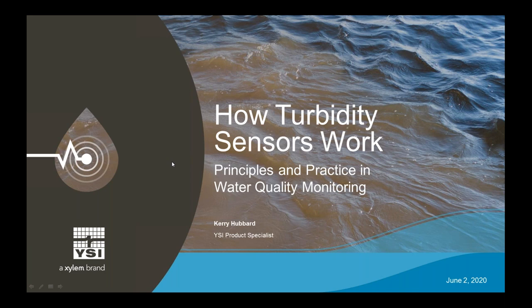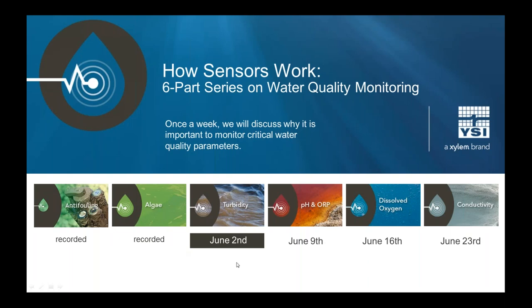Today's turbidity webinar is the third part of a six-part YSI series covering various parameters within water quality monitoring. We're holding webinars every Tuesday. Upcoming presentations include June 9th covering pH and ORP, June 16th dissolved oxygen, and June 23rd conductivity. If you missed our webinars on anti-fouling and algae from the past two weeks, we record all of our webinars and list them on our Xylem Analytics regional websites.